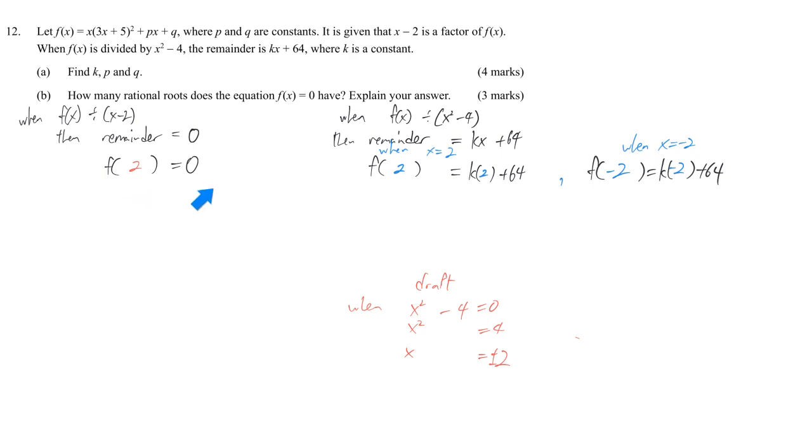We evaluate the first one. We replace every x by 2. So 2 times 3 times 2 plus 5 squared plus p times 2 plus q equals 0. This gives an equation with unknown p and q. We need more information to solve for p and q. 2 times 6 plus 5 which is 11 squared gives us 2, 4, 2. And 2p plus q equals negative 2, 4, 2. So we stop here.